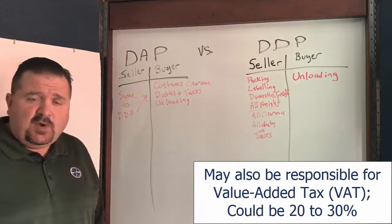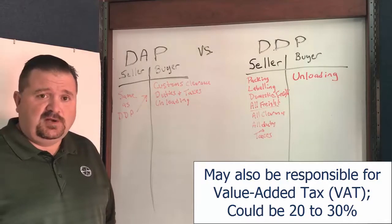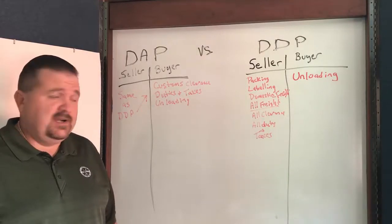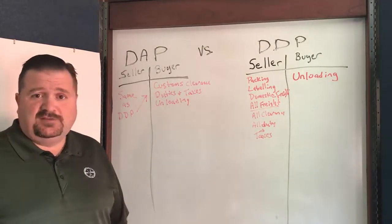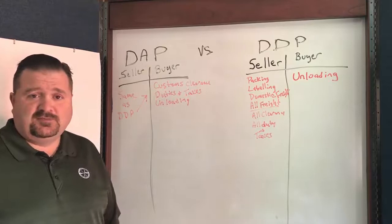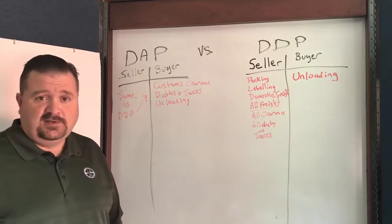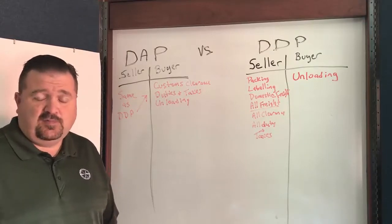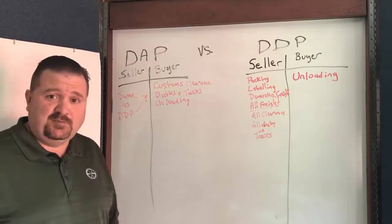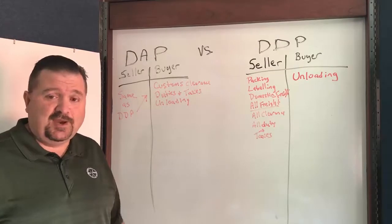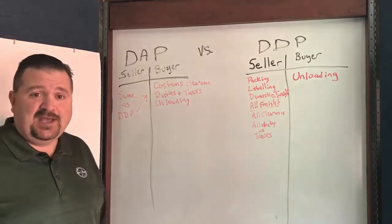So you want to make sure that you have VAT included in your sell rate if you're selling DDP, or else you're going to have a 20 percent tax rate that you didn't expect — and most of you probably don't have 20 percent built into your profit. I hope you do, but it would be an awfully bad surprise.